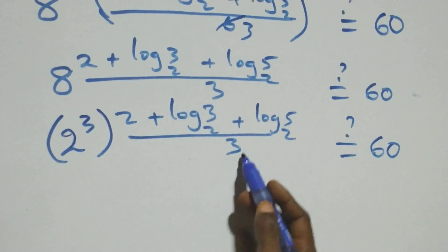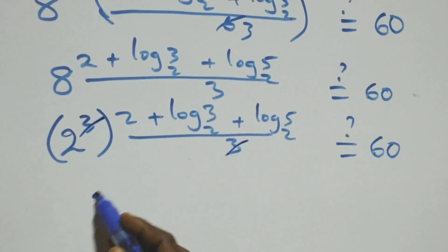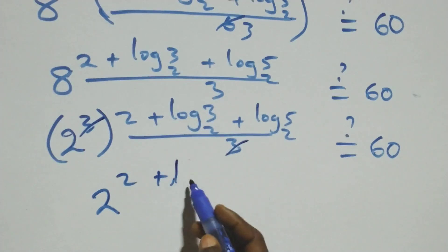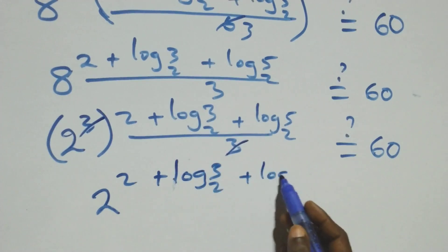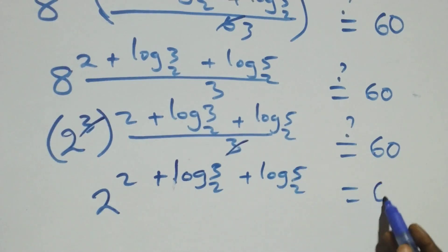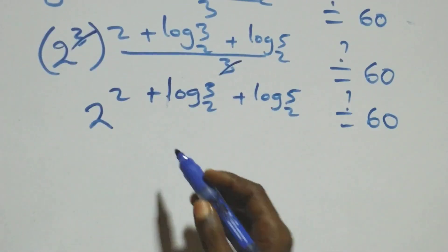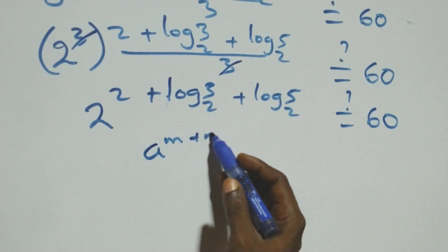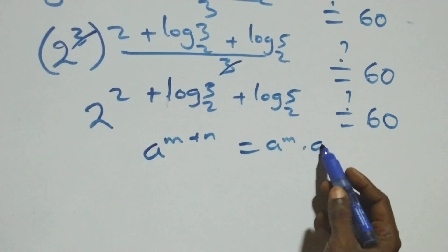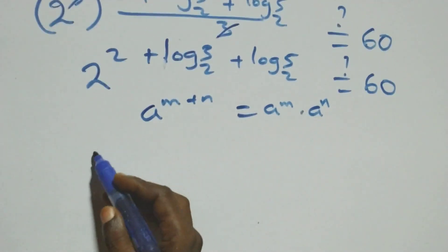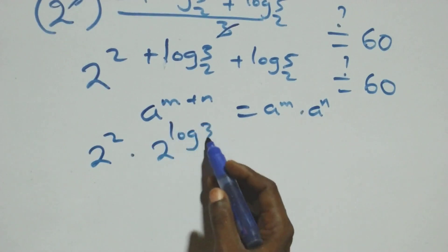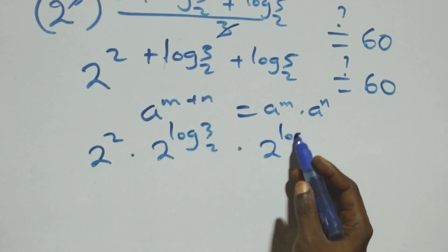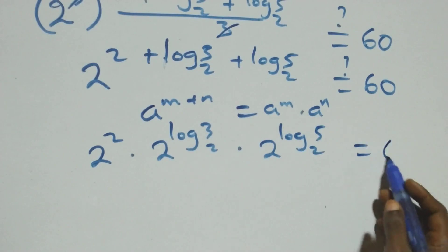The powers multiply, and the 3s cancel, leaving 2 raised to power (2 plus log 3 base 2 plus log 5 base 2) equal to 60. This follows the index law: a raised to power m plus n is the same as a raised to m times a raised to n. So we have 2 squared times 2 raised to log 3 base 2 times 2 raised to log 5 base 2, equal to 60.